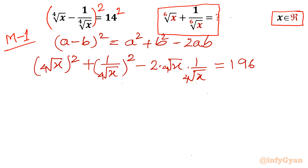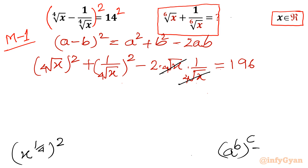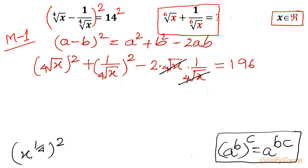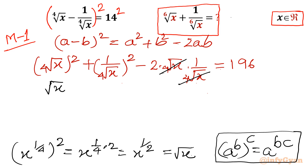The 4th root of x and 4th root of x cancel in the 2ab term. For the squared terms, using the exponent property (a^b)^c = a^(bc), we get x^(1/4) squared equals x^(1/2), which is the square root of x. So the left-hand side becomes: square root of x plus 1 over square root of x minus 2, equal to 196.